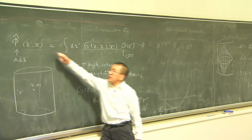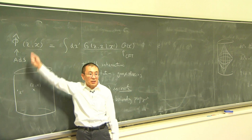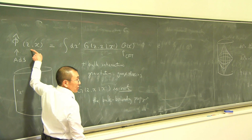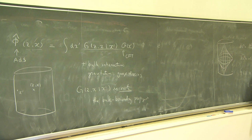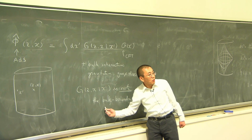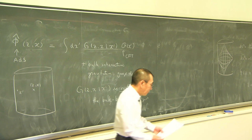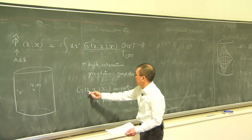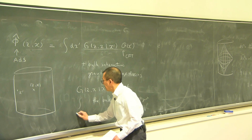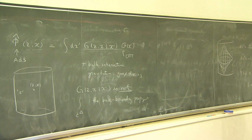The bulk-to-boundary propagator is a function obtained by having a source at a boundary point and seeing how the bulk field behaves. In particular, the bulk operator when it approaches the boundary has non-normalizable behavior. But what we want is the realization of the bulk operator in terms of CFT operators — so as the bulk point approaches the boundary, the behavior should be that of the normalizable mode, z to the delta, rather than non-normalizable, z to the D minus delta.